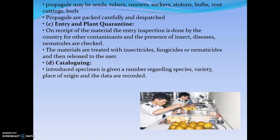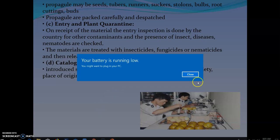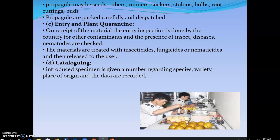The second step is packaging and dispatch. The propagule — the part of the plant used for propagation, such as a stem cutting, tuber, or bud — is packed carefully and dispatched. The next major step is entry and plant quarantine. On receipt of the material, entry inspection is done by the country for contaminants and presence of insect pests, diseases, nematodes, etc. The materials are treated with insecticides, fungicides, and nematocides, and then released to the user.